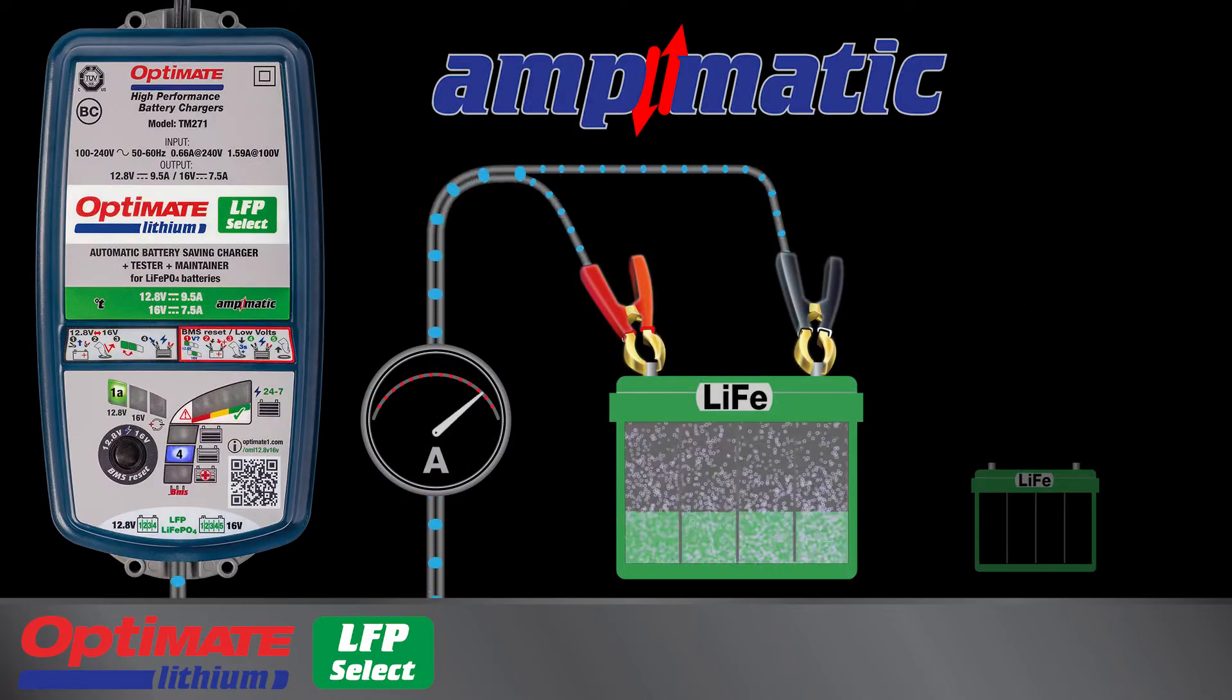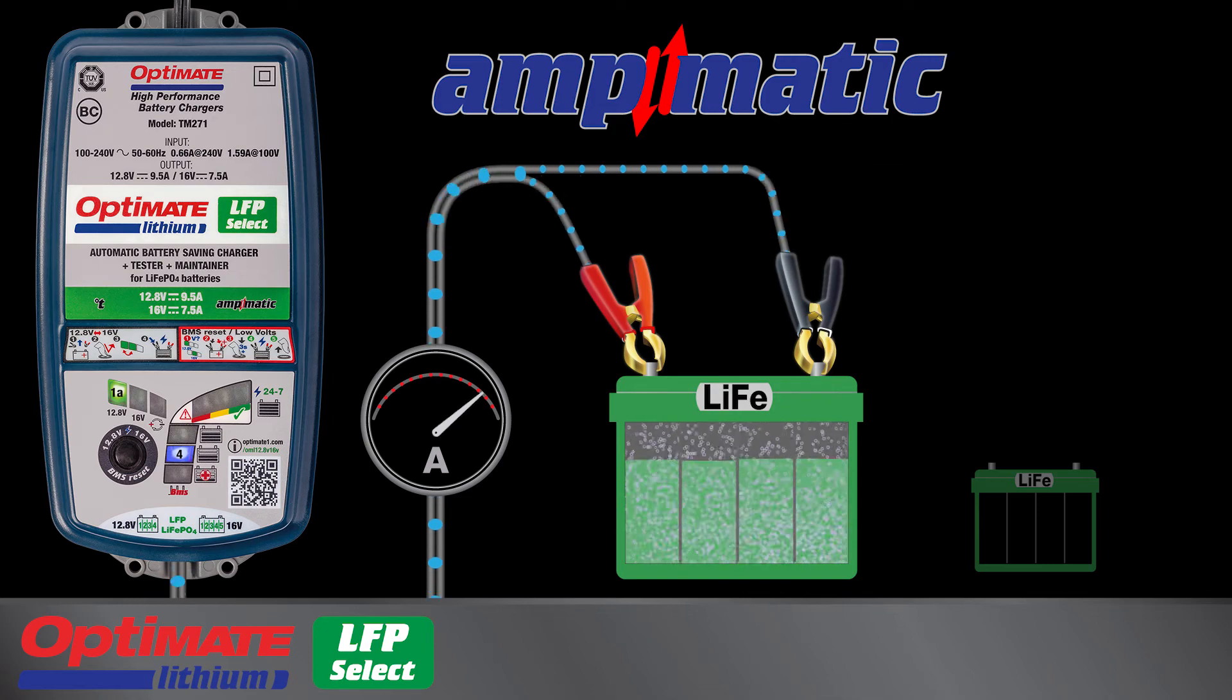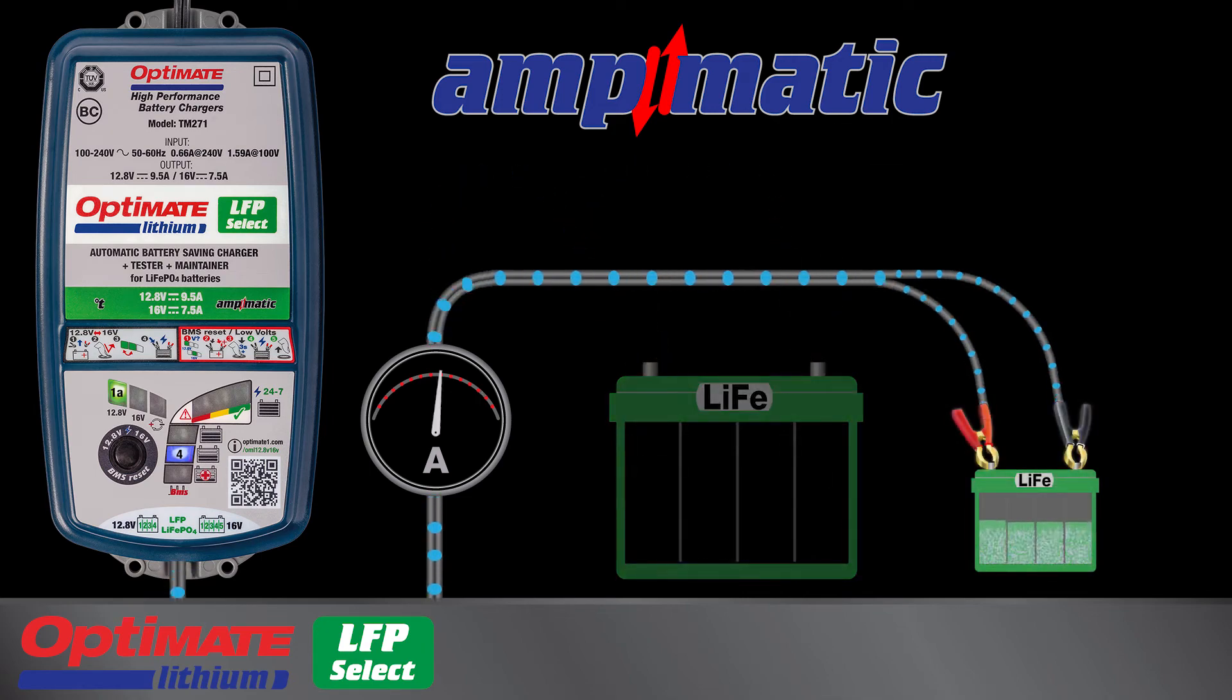During charging, the Ampmatic program automatically adjusts charge current to match the battery's size and condition. A bigger battery gets more, a smaller battery gets less.